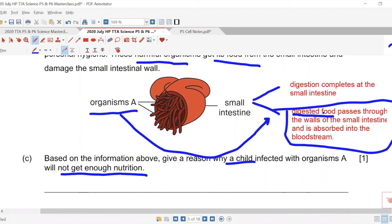So there's lesser food that's absorbed into the bloodstream, everything just decreases. Digested food decreases, how much is in the bloodstream also decreases. That's why my child cannot get enough nutrition.